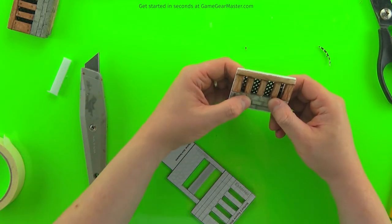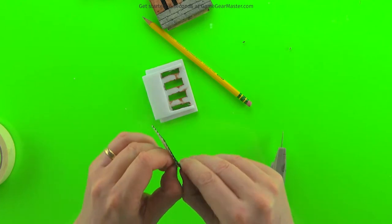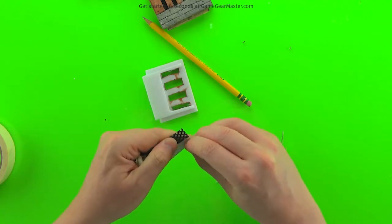There we go. That looks pretty good. And then last but not least, make sure to peel off that masking tape. It's going to be very hard to do that after you put the wall together.